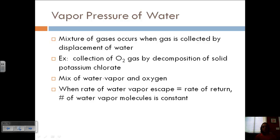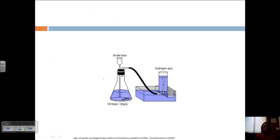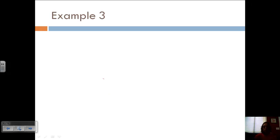When the rate of the water vapor escape equals the rate of return, then the number of water vapor molecules is going to be constant, and that gives us the vapor pressure of water. So it's kind of like partial pressure of water.